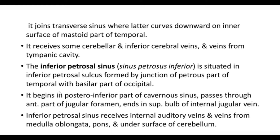The inferior petrosal sinus begins in the posterior inferior part of the cavernous sinus, passes through the jugular foramen, and drains into the superior bulb of the internal jugular vein. Both the superior and inferior petrosal sinuses start from the posterior part of the cavernous sinus - one goes to the transverse sinus and the other goes to the sigmoid sinus at the bulb of the jugular vein.